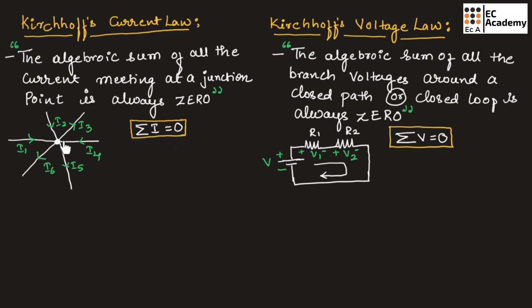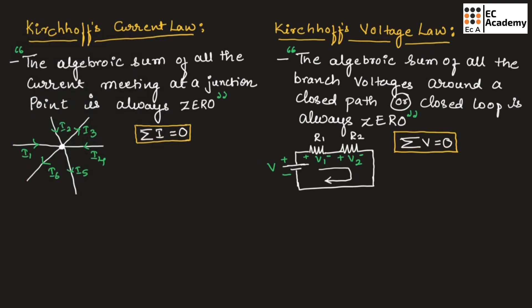If we consider this as an example, here we have a junction point where different currents are flowing towards this junction as well as flowing away from this junction. The currents flowing towards the junction point are assumed to be positive and the currents leaving the junction point are assumed to be negative. Therefore, we can write: I1 + I2 − I3 + I4 − I5 − I6 = 0.